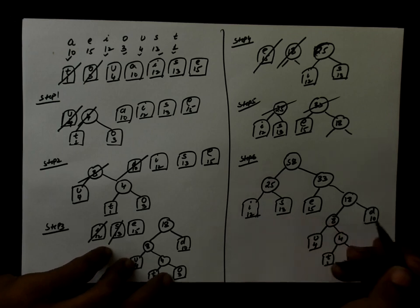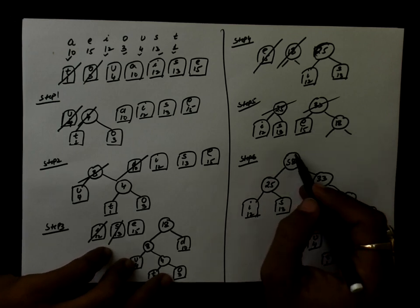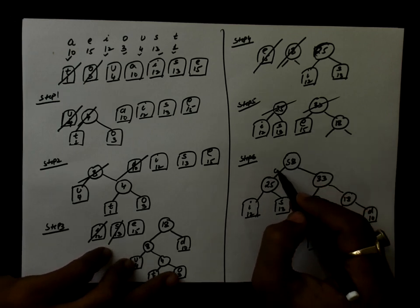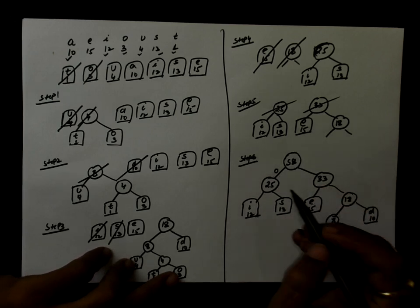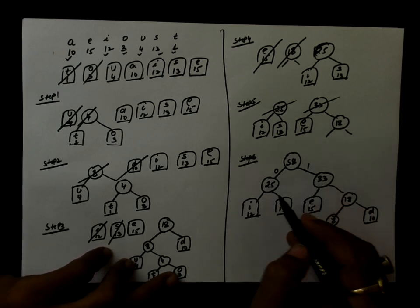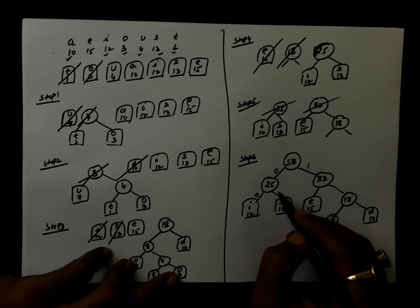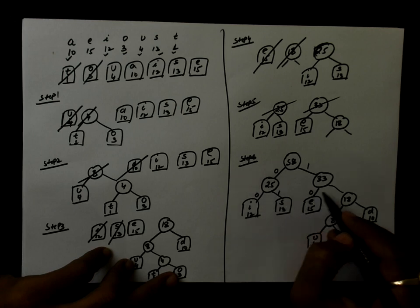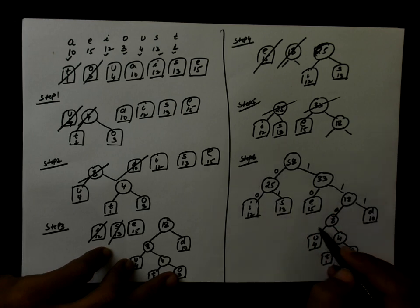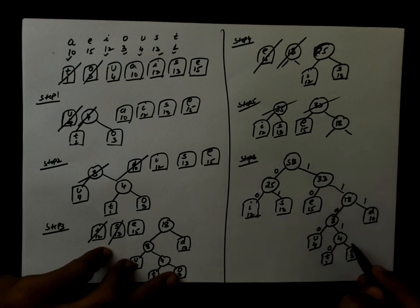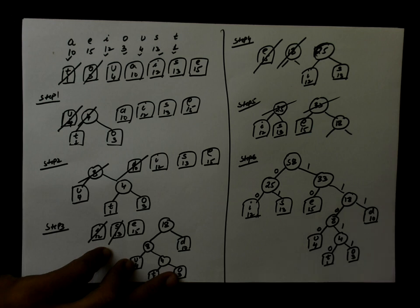Starting from the root node, we assign binary codes: left child is assigned 0 and right child is assigned 1 at every level of the tree.